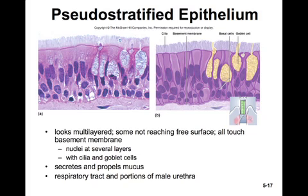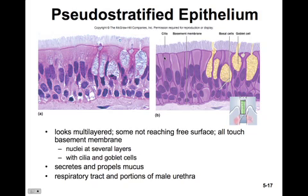Pseudostratified epithelium looks multi-layered but is not — each and every cell actually attaches to the basement membrane. Multiple nuclei appear at several layers, which makes it look stratified. We'll also see cilia, goblet cells, and a brush border layer. It secretes and propels mucus along various tracts and is found in the respiratory tract and portions of the male urethra.